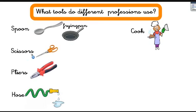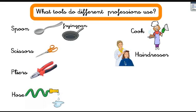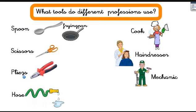And the same question with the scissors — who uses scissors in their work? Many people, but I have one in mind: yes, the hairdresser. The hairdresser cuts your hair with scissors. Excellent. Now look at this tool — it's called a plier. Who do you think uses pliers in their work? The mechanic. Mechanics use lots of tools like pliers and screwdrivers.